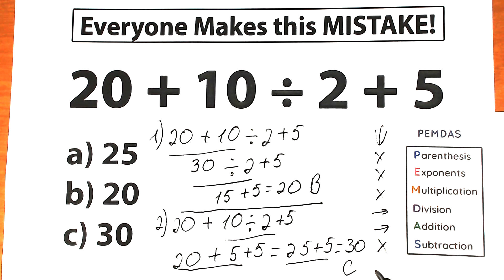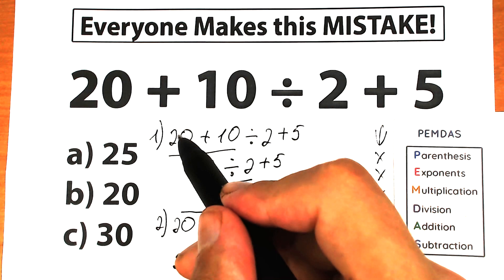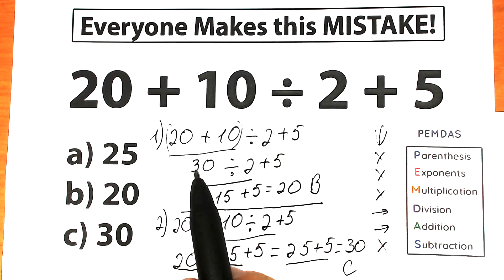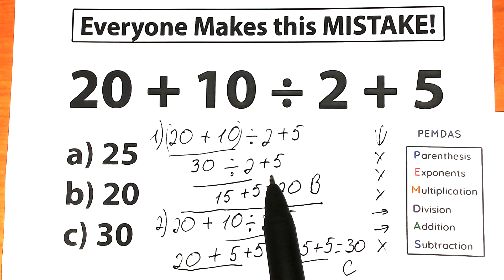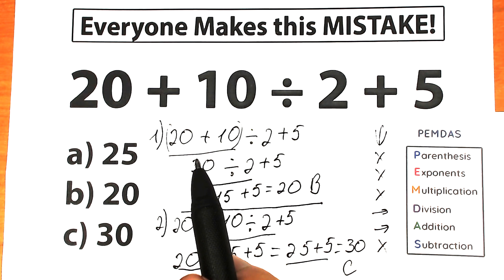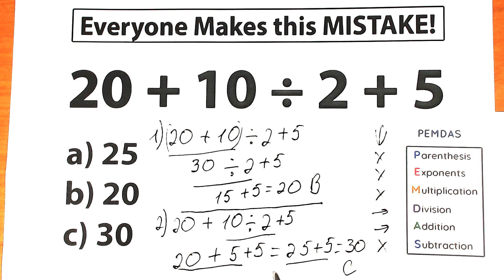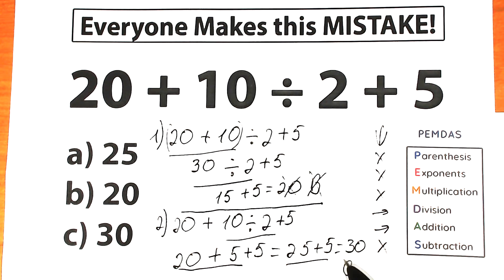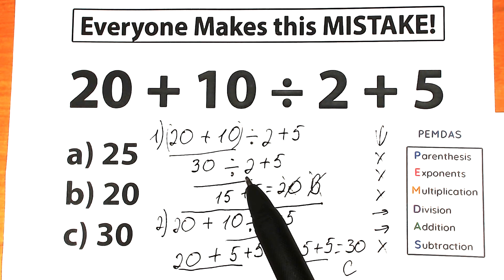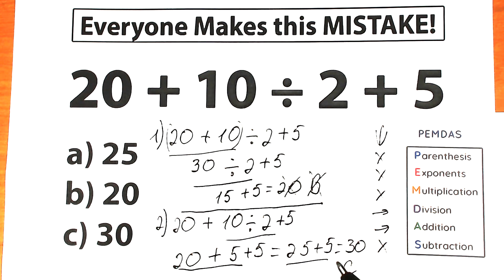But what is the correct answer — Option B or Option C? A lot of students say Option B is correct. But in our case we don't have any brackets. If we had parentheses — like (20 plus 10) divided by 2 plus 5 — then 20 plus 10 equals 30, and 30 divided by 2 plus 5 equals 20, which would be correct with brackets. But without parentheses, that approach is absolutely wrong and incorrect. Solving strictly left to right without following order of operations is a bad approach. According to PEMDAS: 10 divided by 2 equals 5, then 20 plus 5 plus 5 equals 30. Option C is correct.